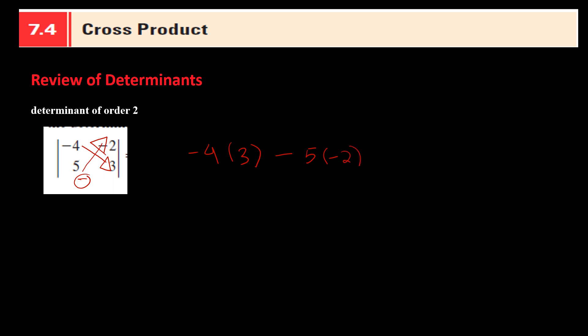So let's do it. 4 times 3 is negative 12, and then negative times 5 times negative 2, which is negative 10. Negative negative is a positive, so we get 12 plus 10, which gives negative 2. So negative 2 is the determinant of this 2 by 2 matrix.